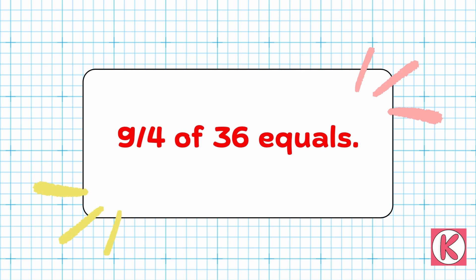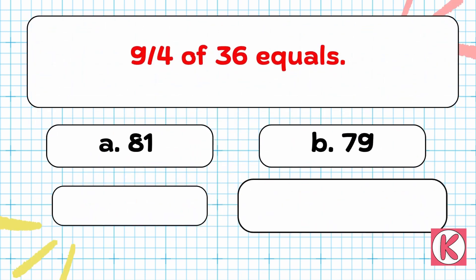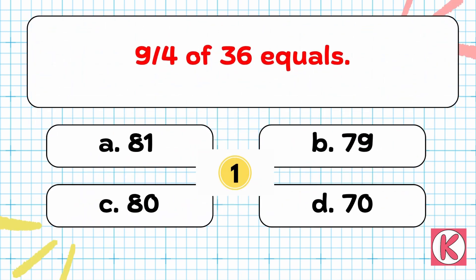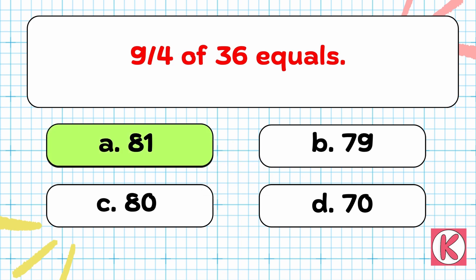Next question. 9 by 4 of 36 equals... Right answer: Option A — 81.